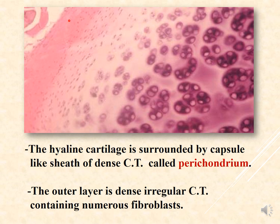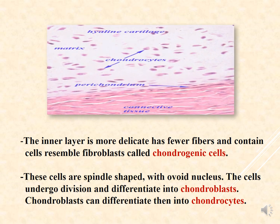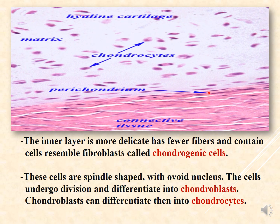The perichondrium is composed of an outer layer and an inner layer. The outer layer consists of dense irregular connective tissue containing numerous fibroblasts, collagen fibers, and blood vessels. The inner layer is more delicate, has fewer fibers, and a high number of cells resembling fibroblasts called chondrogenic cells. These chondrogenic cells are spindle-shaped with an ovoid nucleus.